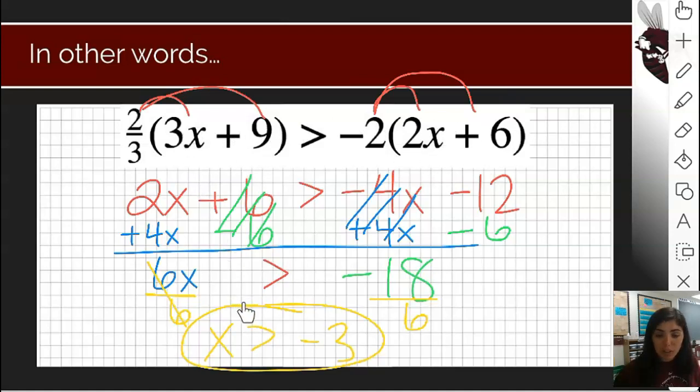If I choose something that's not greater than negative 3 for my x, like negative 5, that's smaller, this would not become a true mathematical statement. We're trying to create true mathematical statements here. This is more than just one single number though, because I can list out a ton of numbers that are greater than negative 3. That means we have no longer just one solution. We have what's called a solution set.